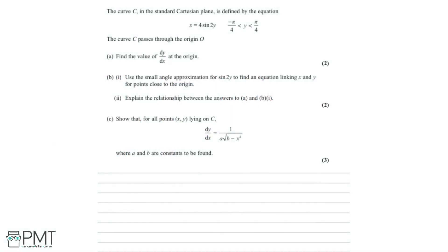The curve C in the standard Cartesian plane is defined by the equation x equals 4 sine 2y. The curve C passes through the origin. Part A says we need to find the value of dy by dx at the origin, and this is for two marks.